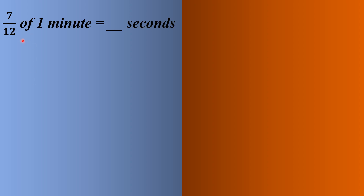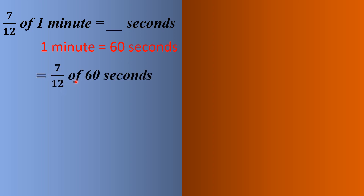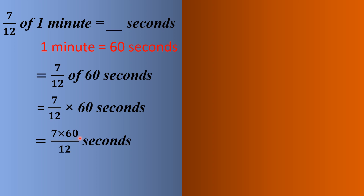Next question: 7/12 of 1 minute equals how many seconds? We know 1 minute has 60 seconds, so the question becomes 7/12 of 60 seconds. Replacing 'of' with multiply: 7/12 multiplied by 60 seconds. We multiply numerator and whole number: 7 multiplied by 60 by 12. Since 12 fives are 60, the answer is 35 seconds.